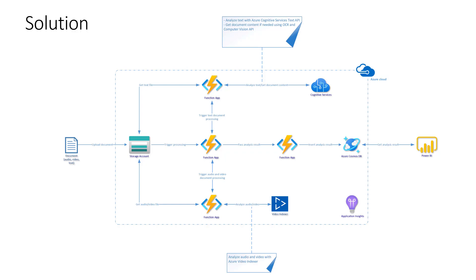Once the file is uploaded, an Azure Function is triggered. There is a blob trigger used, and once the file is uploaded to Azure Blob Storage, this Azure Function is triggered. I use Azure Durable Functions — I encourage you to visit my GitHub repository and check the implementation details. Once this function is triggered, we have to discover what type of document it is — whether it's a PDF document or an audio or video file.